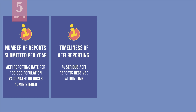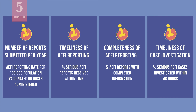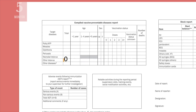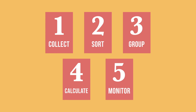An indicator for timeliness might be the percentage of serious AEFI reports received within a specified time according to national recommendations. Include indicators to monitor the completeness of AEFI forms, such as the percentage of AEFI report forms with completed information, and monitor the timeliness of case investigation — such as the percentage of serious AEFI cases investigated within 48 hours of occurrence. As a supervisor, check on areas not reporting AEFIs or submitting zero reports to determine whether there are truly no AEFIs or if this reflects a failure to report. These are the key steps for analyzing AEFI data.